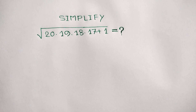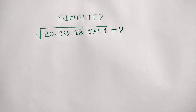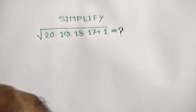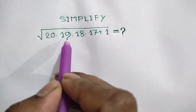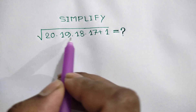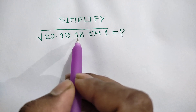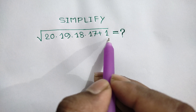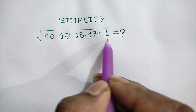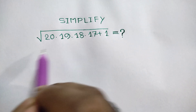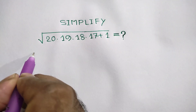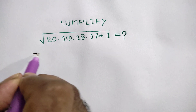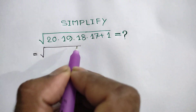Hi everyone. In this video I am going to show how to simplify this math problem: the square root of 20 times 19 times 18 times 17 plus 1. No calculator allowed.